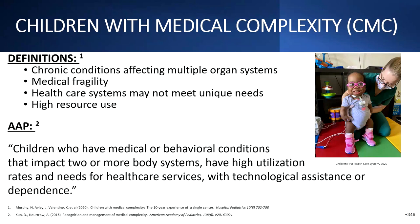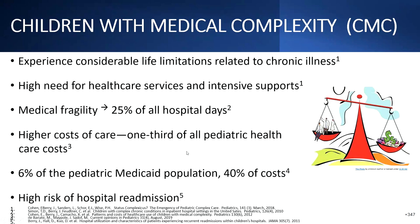The AAP definition: children who have medical or behavioral conditions that impact two or more body systems, have high utilization rates, and needs for healthcare services with technological assistance or dependence — which is a lot of the groups I work with. Trach and vent dependence is something I've been working on for many years, and we come across these children as children with medical complexity.